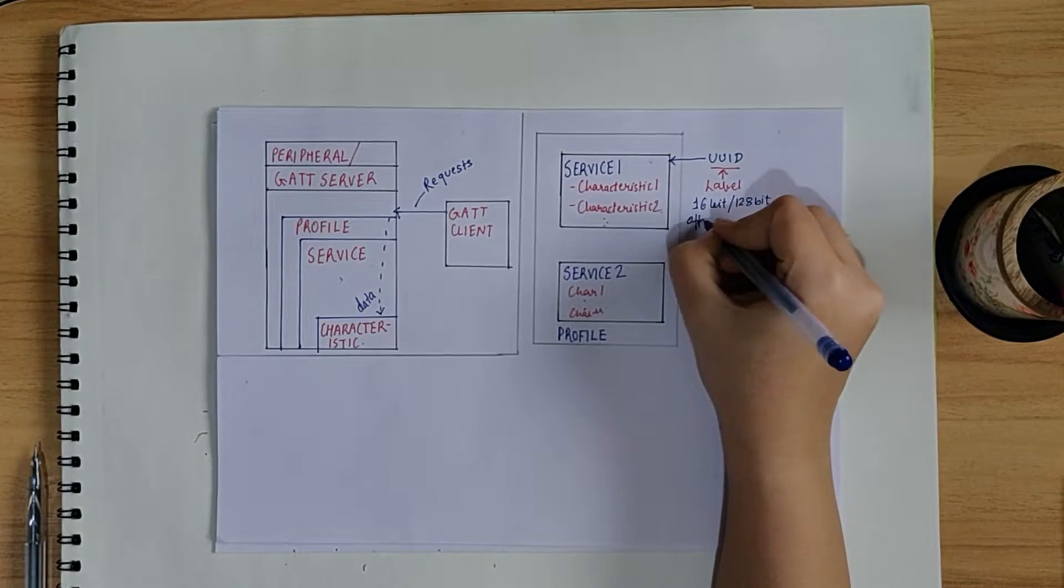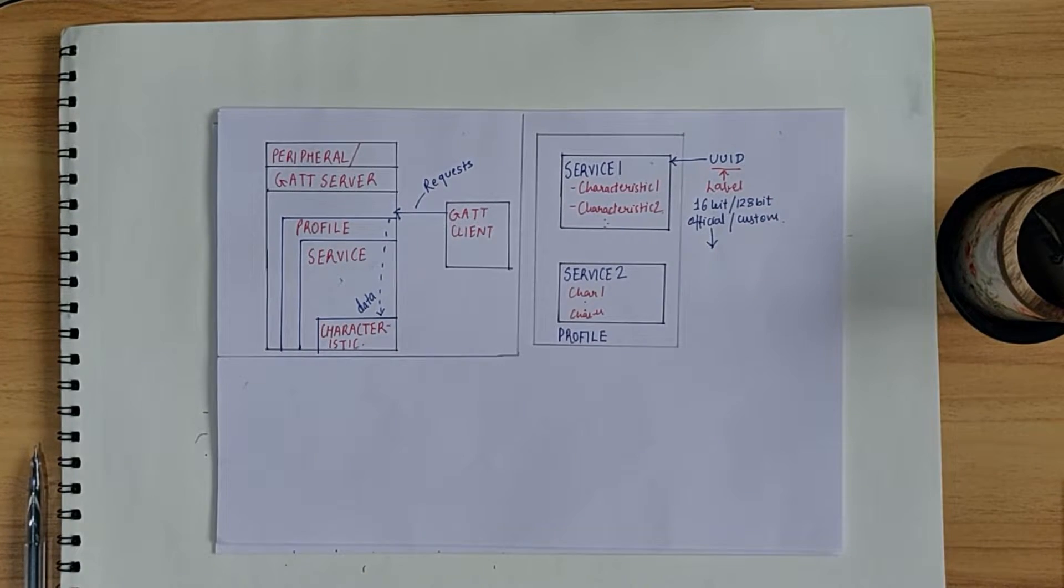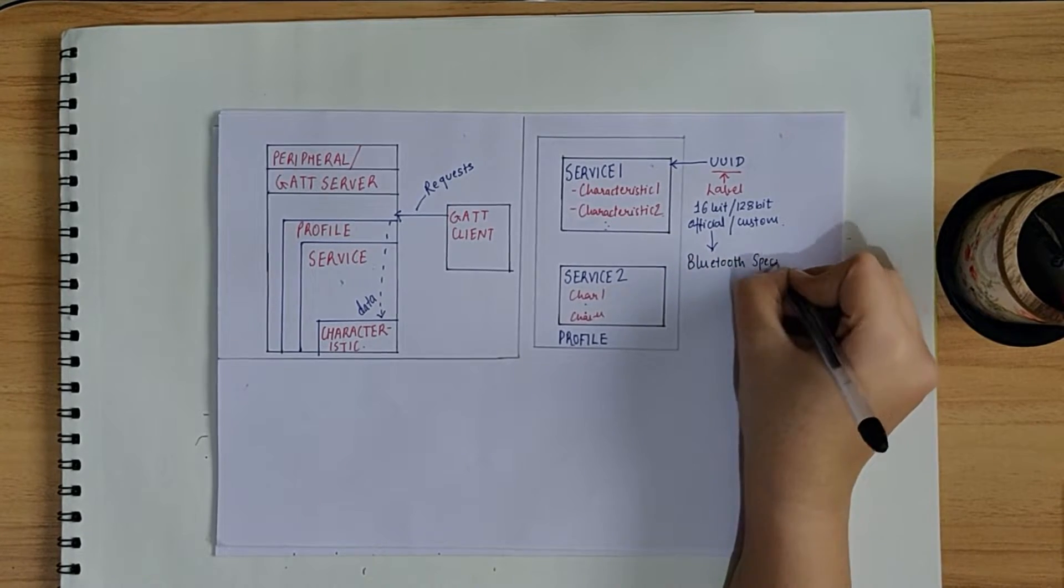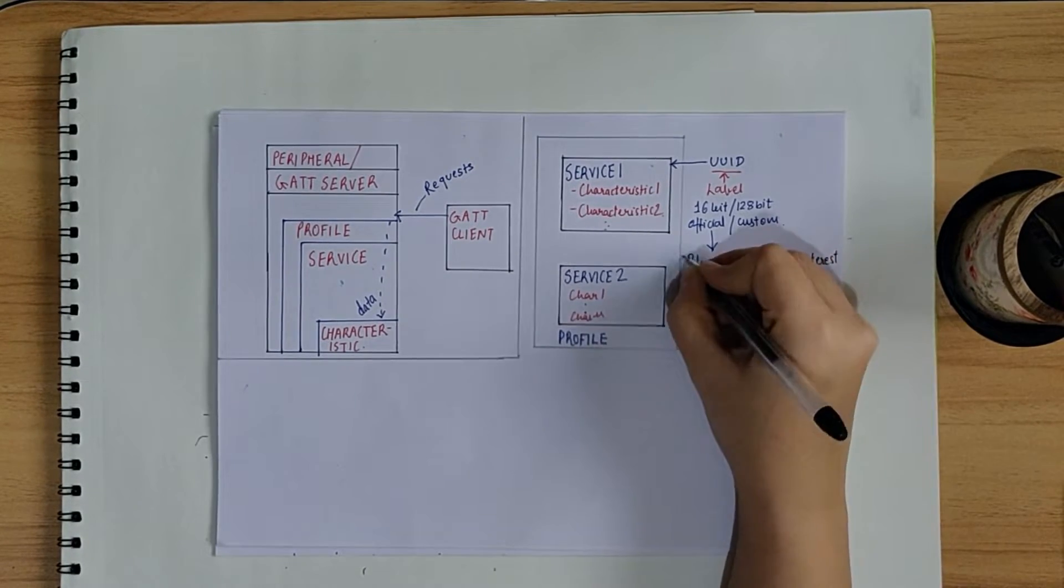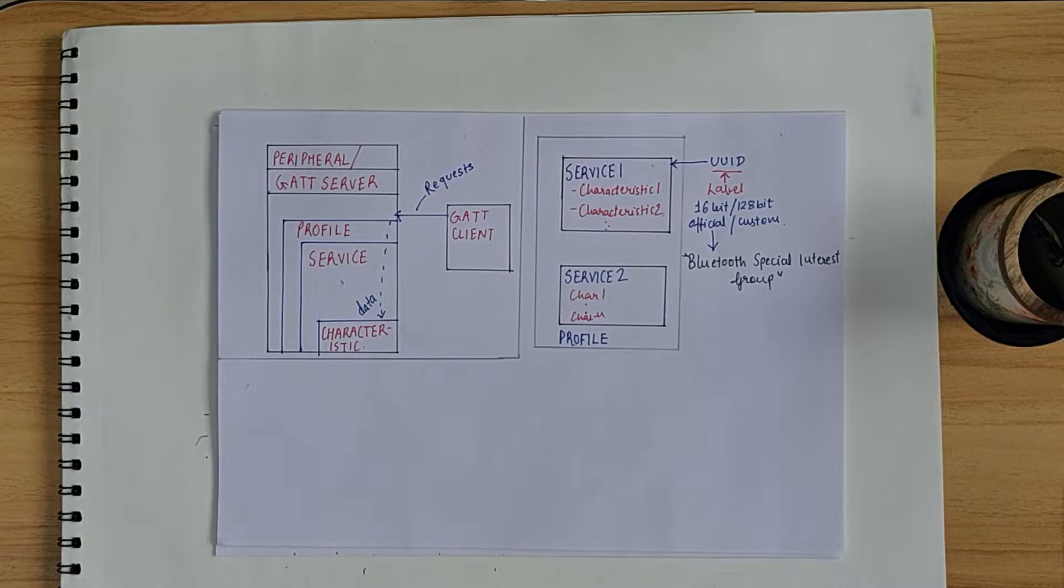Now, what do we mean by predefined or officially adopted profile or services? So, these profiles or services are predefined by Bluetooth special interest group. Thus, we can readily use them. If what we desire is not on this list, then we can create our own custom profile and services as well.